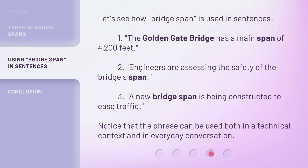Understanding these types can help you visualize and accurately describe different bridge spans. Let's see how 'bridge span' is used in sentences. One: 'The Golden Gate Bridge has a main span of 4,200 feet.' Two: 'Engineers are assessing the safety of the bridge's span.' Three: 'A new bridge span is being constructed to ease traffic.' Notice that the phrase can be used both in a technical context and in everyday conversation.